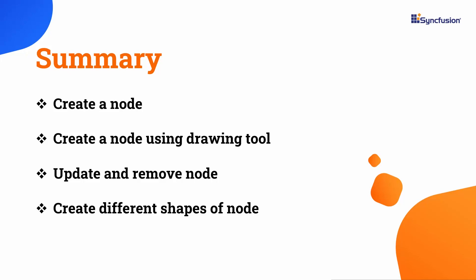In this video, we have seen how to create a node in the code behind and draw a node using the drawing tool. We have also seen how to update and remove nodes from the diagram canvas. Lastly, we have seen the different node shapes. If you would like to see the working example, you can download it from the GitHub link in the description below. I have also provided a link where you can see if you qualify for a free license key to use our Blazor products through our community license. If you found this video useful, do like it and subscribe to our channel. Thanks for watching!